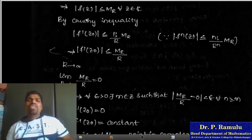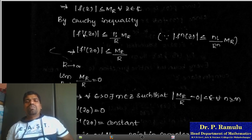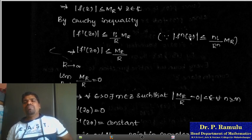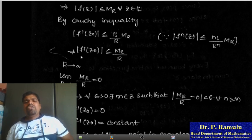By Cauchy's inequality: |f^(n)(z₀)| ≤ n! × M / r^n. Taking n = 1 for the first derivative: |f'(z₀)| ≤ 1! × M/r = M/r. As r tends to infinity, lim(r→∞) M/r = 0, which implies |f'(z₀)| ≤ 0.